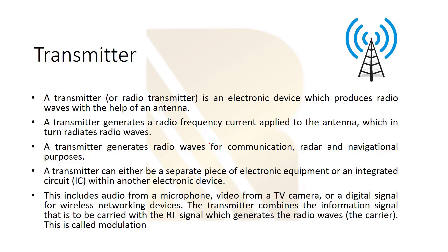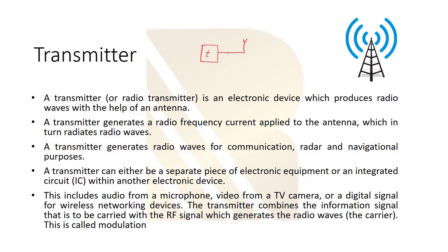Now we start with the transmitter. A transmitter, or radio transmitter, is an electronic device which produces radio waves with the help of an antenna. The transmitter generates a radio frequency current applied to the antenna, which in turn radiates radio waves. Essentially, current flowing through the antenna produces electromagnetic waves that carry the signal.